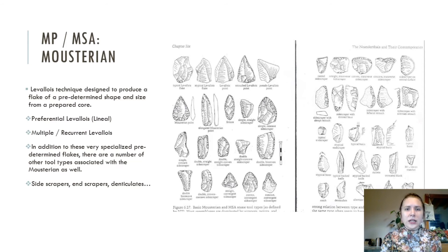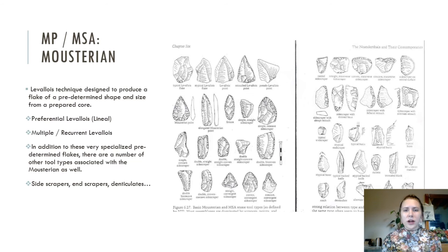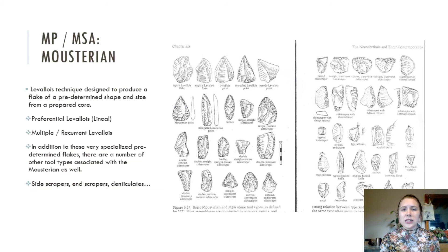In addition to these very specialized predetermined flakes, there are also a number of other tool types associated with the Mousterian. Francois Bordes defined over 63 different flake tool types for the Mousterian, including a variety of side scrapers, end scrapers, denticulates, and notched pieces. These different tool forms correspond with changing and diversifying behaviors through time, many of which only begin to present themselves in the Middle Paleolithic and Middle Stone Age. The variability likely stems from a series of causation driven by both environmental and cultural conditions.